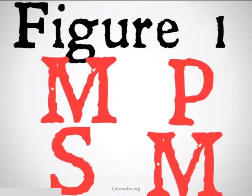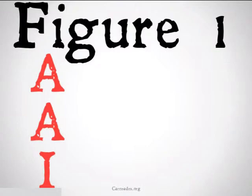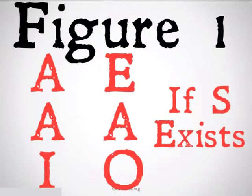Figure 1 goes as follows: the conditionally valid syllogisms are AAI and EAO. They're only going to be valid for Aristotle if S exists, and they're never going to be valid for Boole.